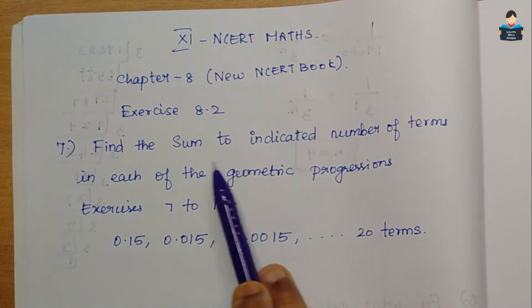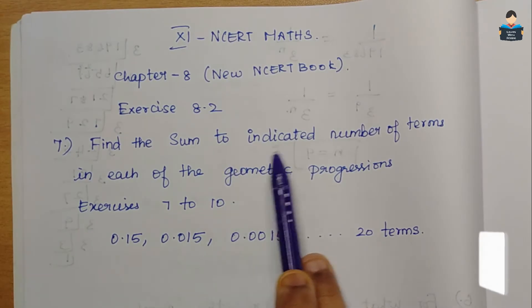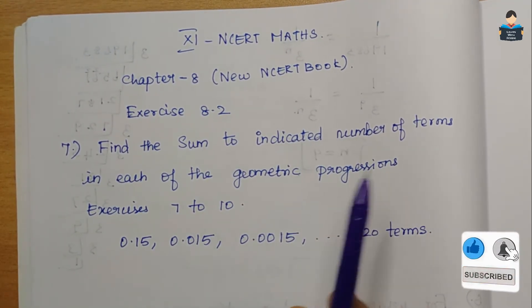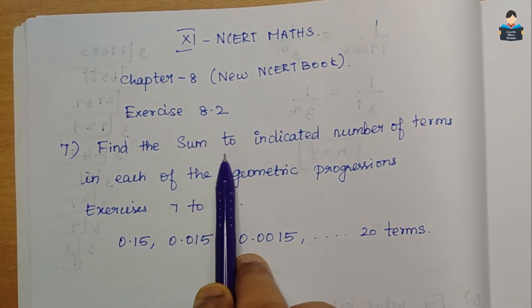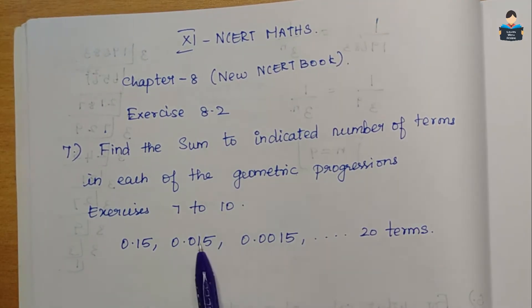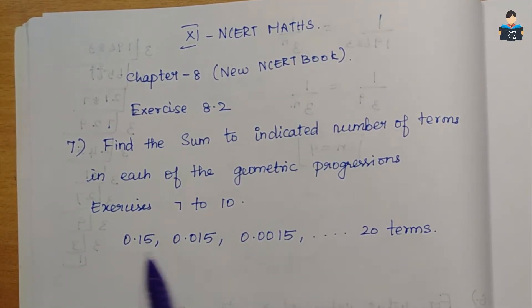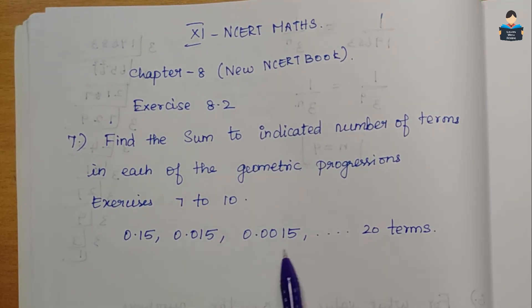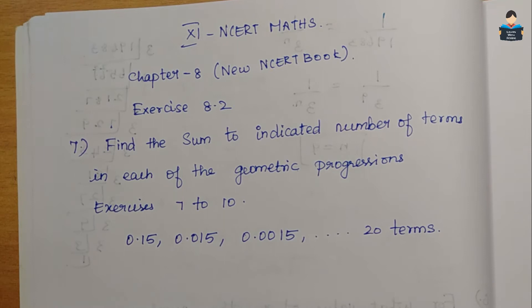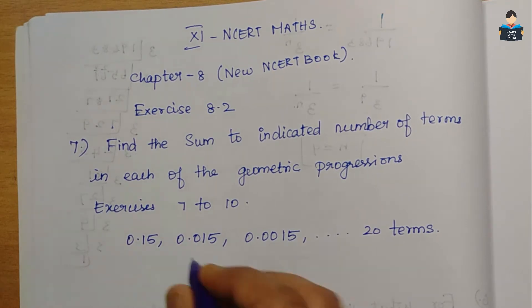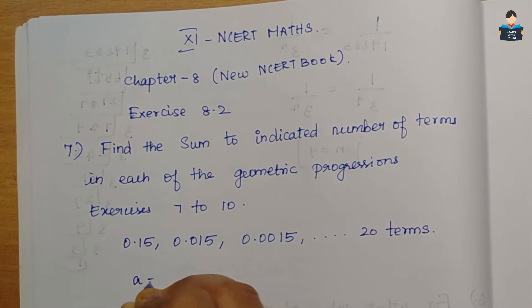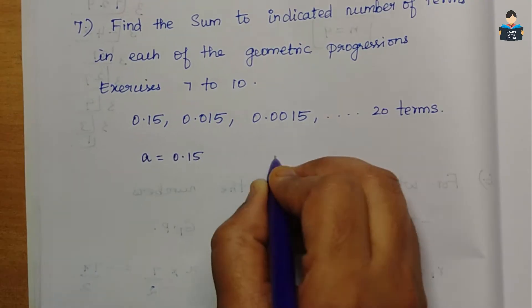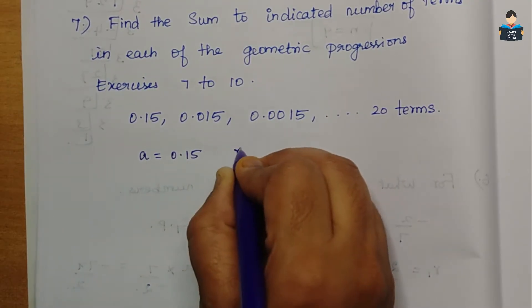Find the sum to the indicated number of terms in each of the geometric progressions. We need to find the sum of the series: 0.15, 0.015, 0.0015... up to 20 terms. First, find the first term. Then find the common ratio.